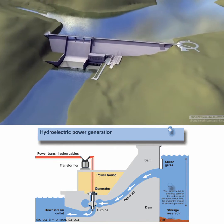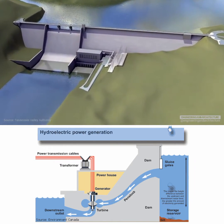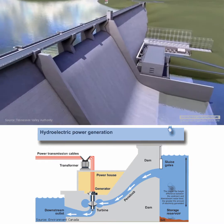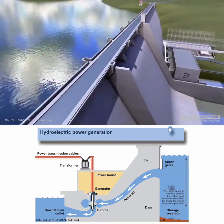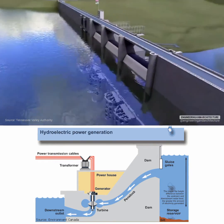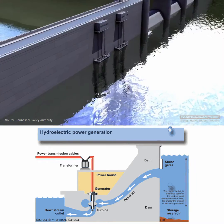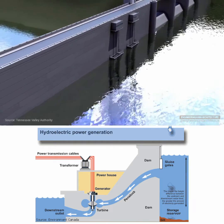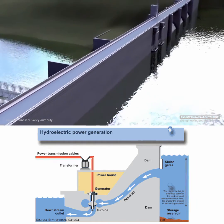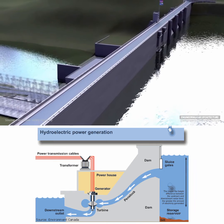Hydroelectric power is generated using the force of falling water. Water is held behind a dam, forming an artificial lake or reservoir. When electricity is needed, some of the water in the reservoir is released through a water intake in the dam.